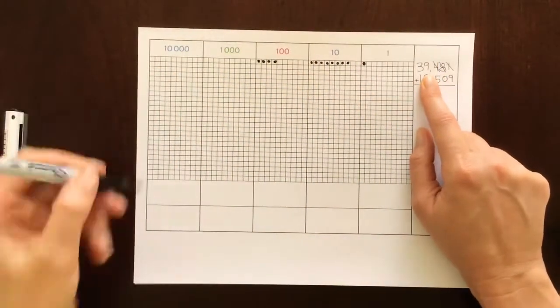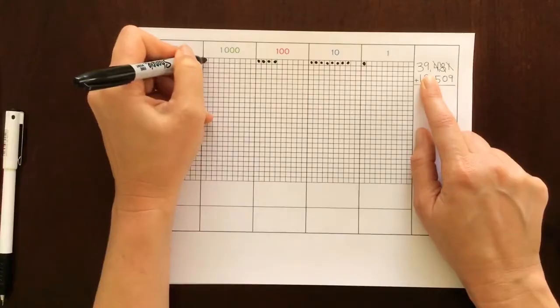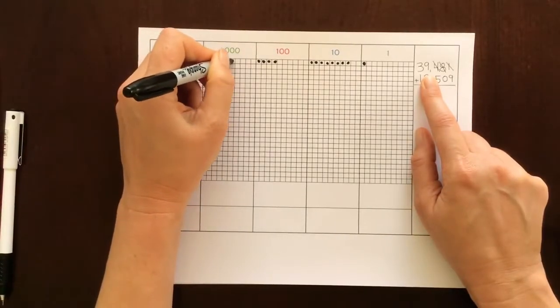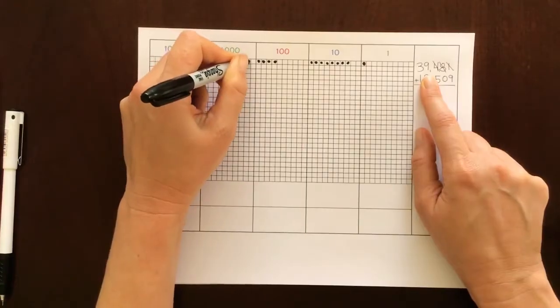Next is the thousands place. We have 9: 1, 2, 3, 4, 5, 6, 7, 8, and 9 thousands.